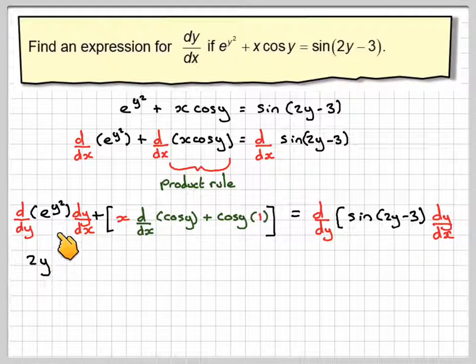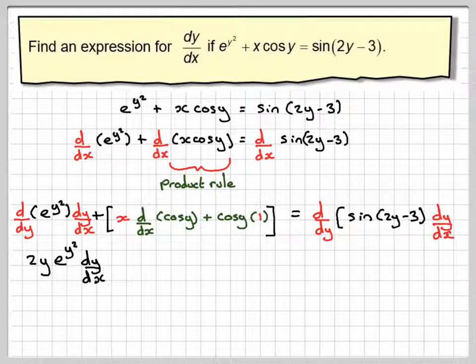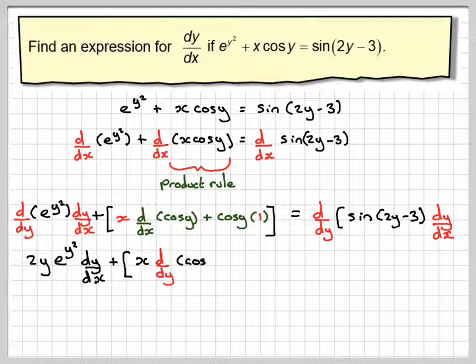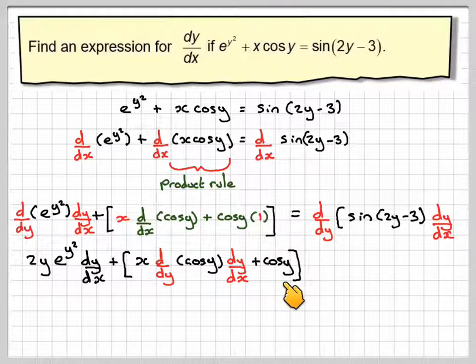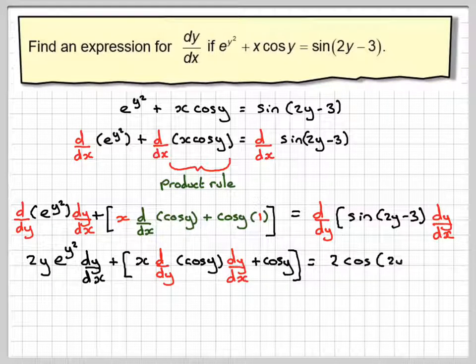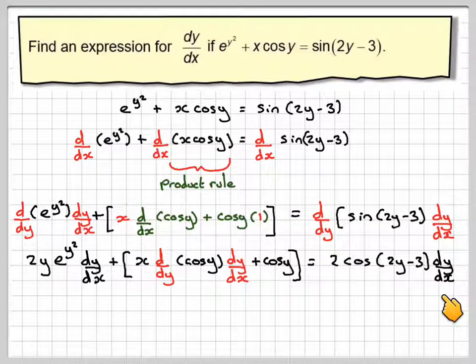This gives me, so you have to differentiate this, you're going to get 2y e to the y squared dy/dx plus x d/dy of cos y dy/dx plus cos y. And this is going to give 2, let me differentiate this, cos of 2y minus 3 dy/dx.